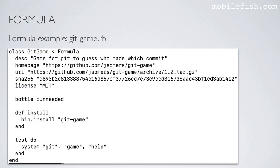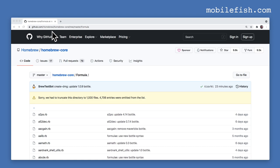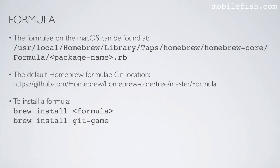Here is a formula example. This is the package name — git-game — and this is what a formula looks like. As you can see, here is a URL where the package tarball can be downloaded from. The formulae on macOS can be found at this location, and this is the default Homebrew formulae git location. To install a formula, type this command — for example, brew install git-game.